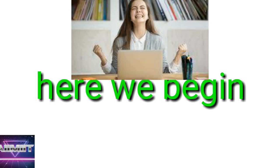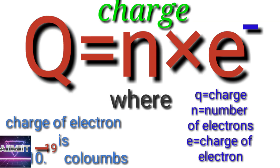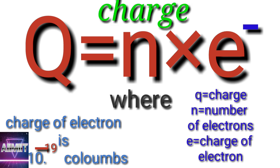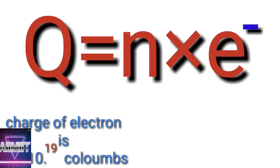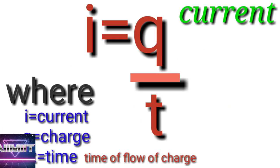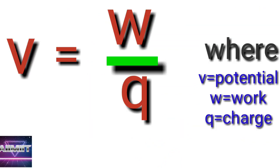Here we begin. Number one: q = ne, where q is charge, n is the number of electrons, e is the charge of electron. The charge of electron value is 1.6 × 10^-19 coulombs. Number two: i = q/t, where i is current, q is charge, and t is the time of flow of current. Number three: V = W/q, where V is potential, W is work, and q is charge.